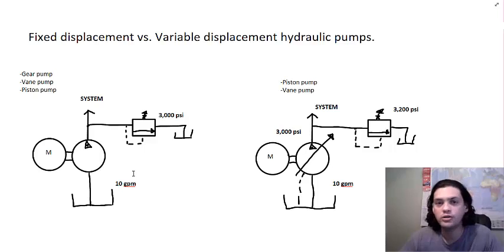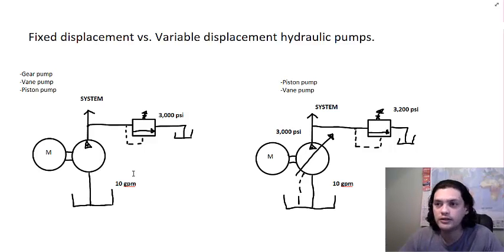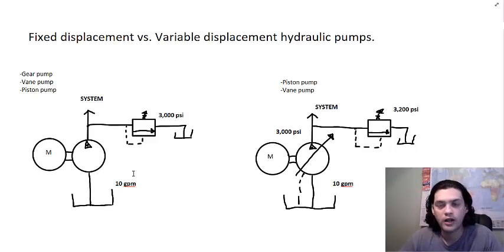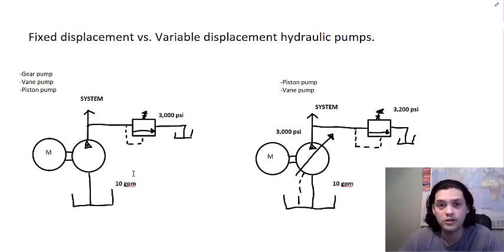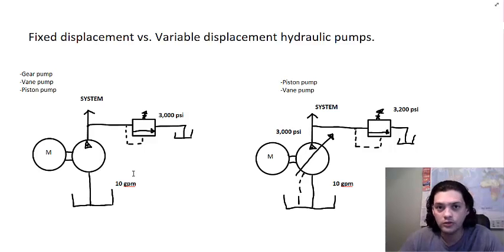For a system that runs only for a few minutes — say you have a cylinder on a ramp and you want to lift or lower a platform — and you're only working it for a couple of minutes, with fluid dumping through the relief valve for only a few seconds, you can get away with it. It's very low energy and not enough time to overheat the system. In an application like that, it's okay to use a fixed displacement pump.